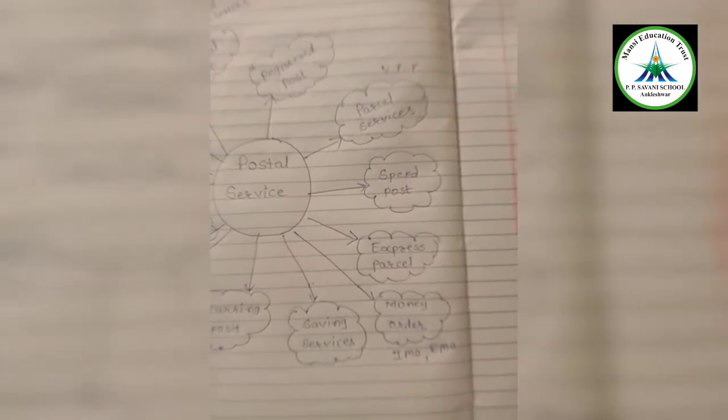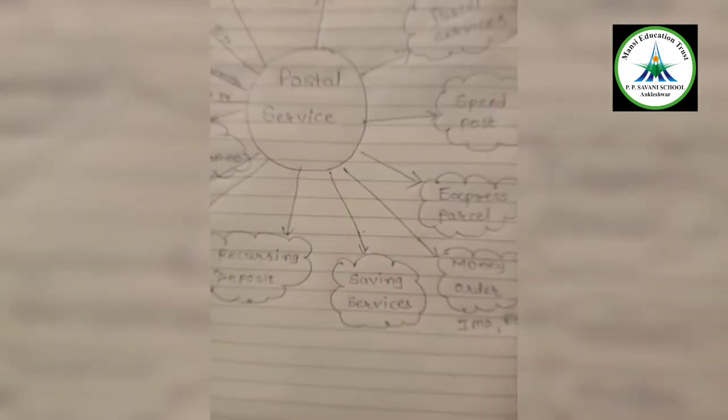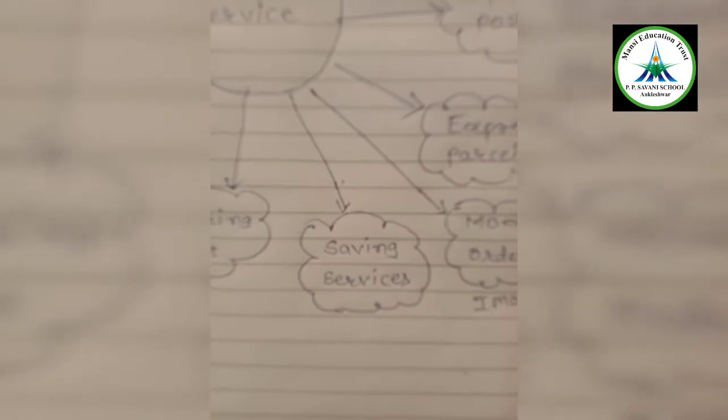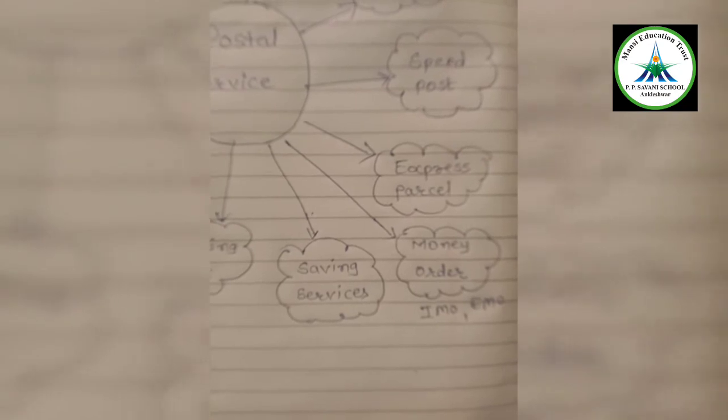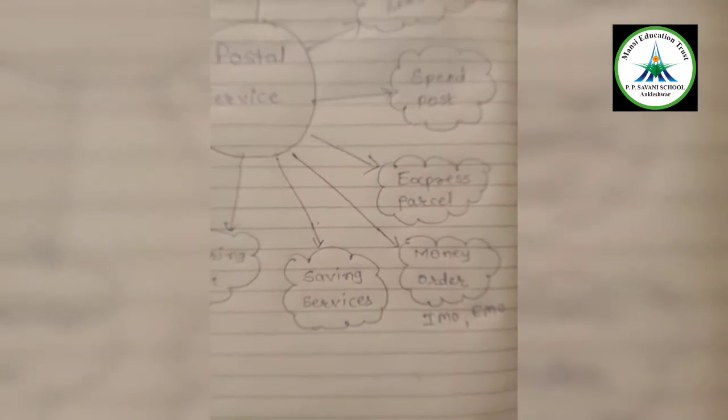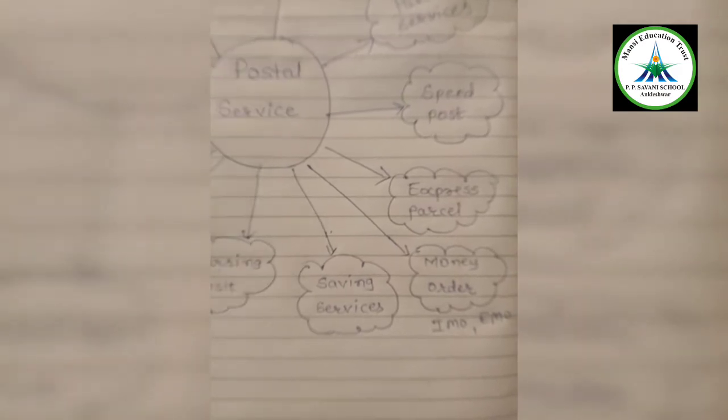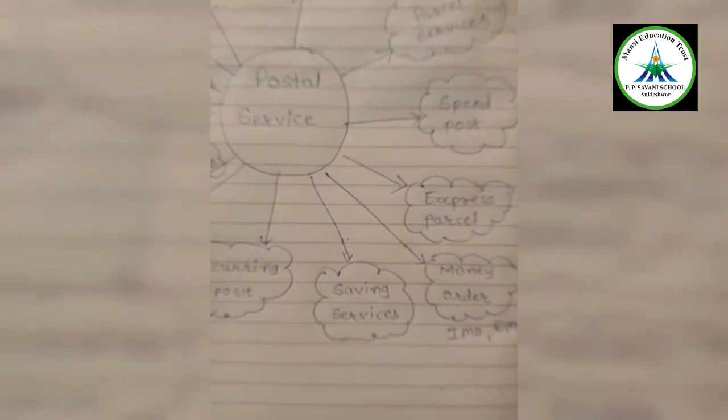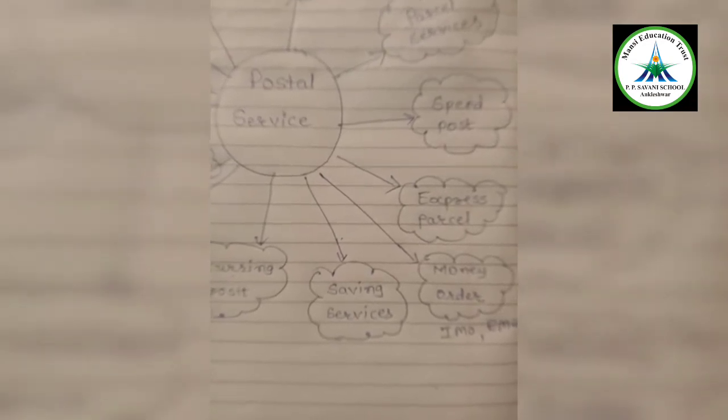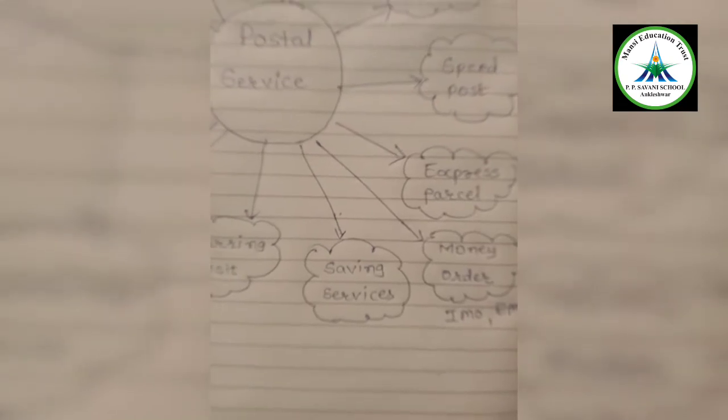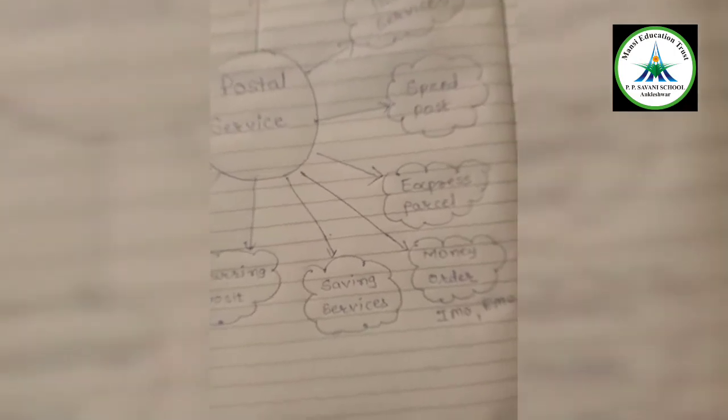Next is saving services. The postal department just like bank offers various schemes of savings to us: five years recurring deposit scheme, monthly income scheme, senior citizen certificate, public provident fund, Vikas Patra, Sukanya Samruddhi Yojana, etc. Saving account also can be opened and checkbook is also given and nowadays ATM facility is also available.